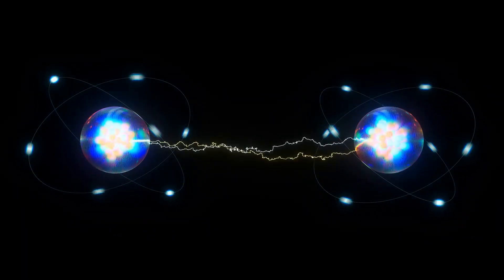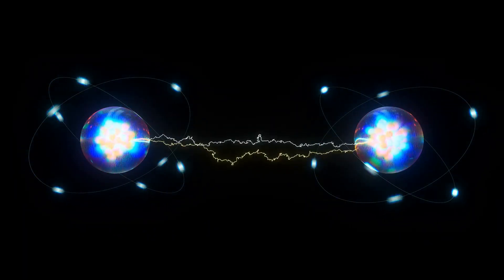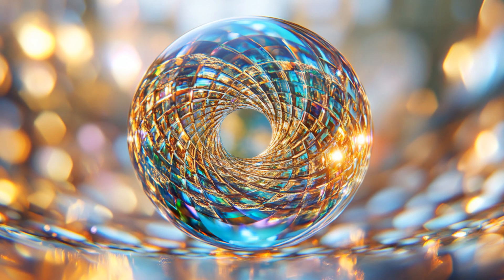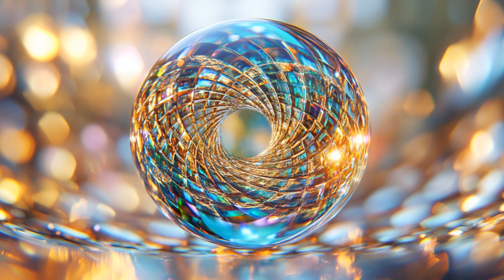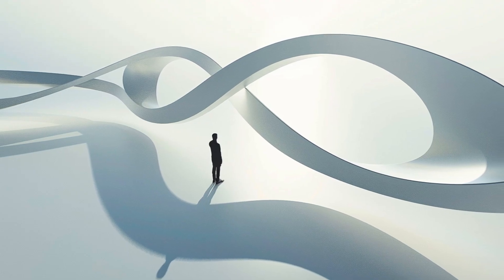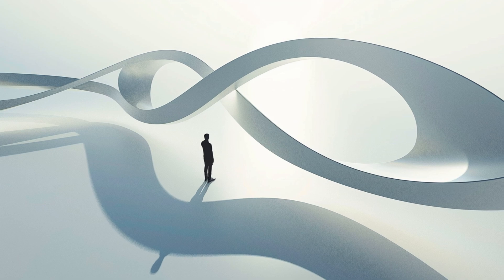By manipulating these particles, we can create regions of negative energy density. These regions warp space-time, allowing signals to travel faster than light. Imagine a cosmic shortcut, a wrinkle in the fabric of space-time itself.